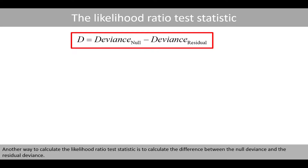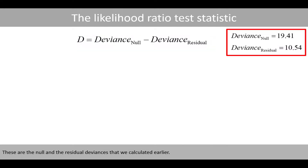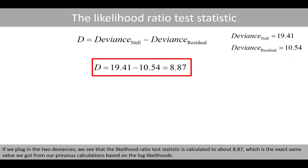Another way to calculate the likelihood ratio test statistic is to calculate the difference between the null deviance and the residual deviance. Using the null and residual deviances calculated earlier and plugging in the two deviances, we see that the likelihood ratio test statistic is again calculated to be 8.87, which is the exact same value we got from the calculations based on the log likelihoods.